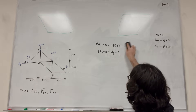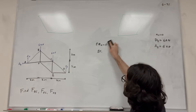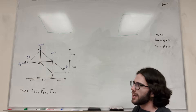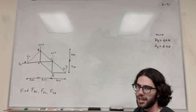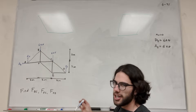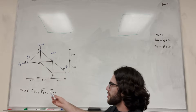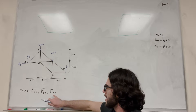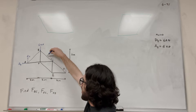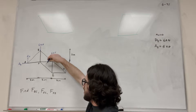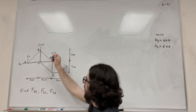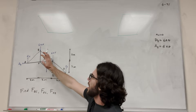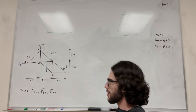Now we need to do the method of sections. When doing the method of sections, we want to take a cut, and the cut needs to be really effective. For a cut to be effective, you want it to go through all of the forces you're trying to find — force BC, force FC, and force FE. An effective cut would go right there, cutting off all three of them.